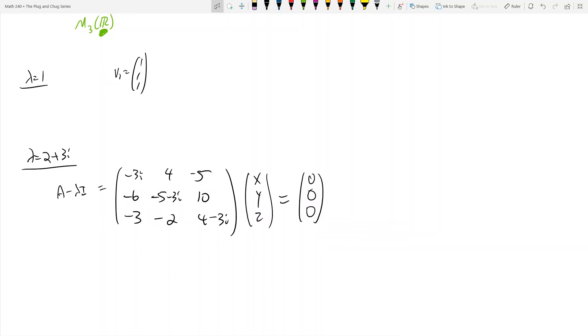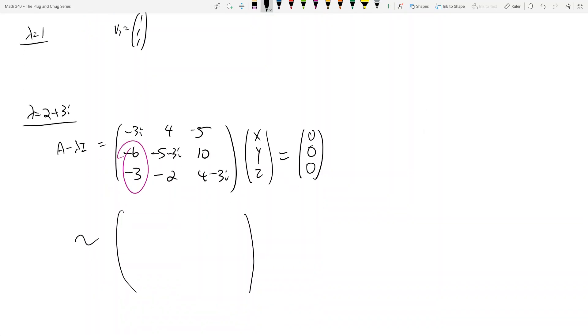You can proceed by row reducing in your usual favorite ways. I'm going to zero out these two entries. My first column is -3i, 4, -5. Then I'm going to take row 2 plus 2i times row 1, and row 3 plus i times row 1.